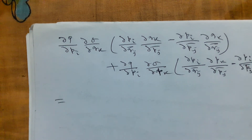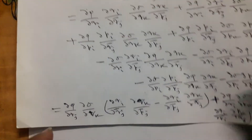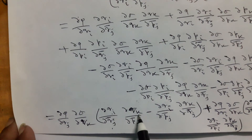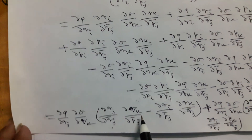So for the first two terms we obtain from this: this is the Poisson bracket of qᵢ and qₖ.